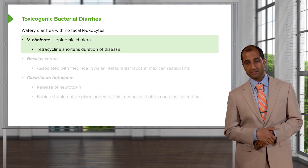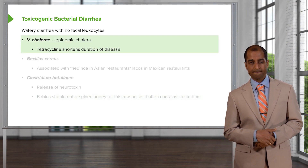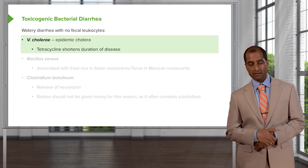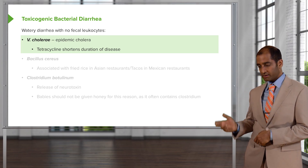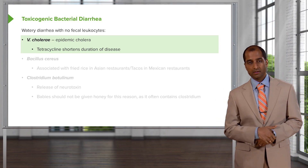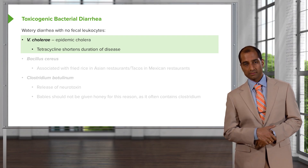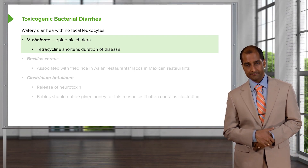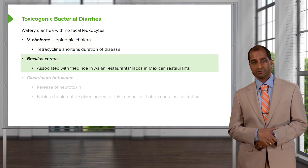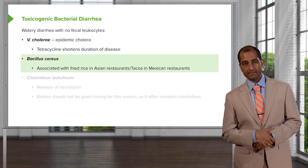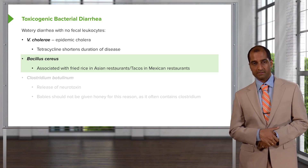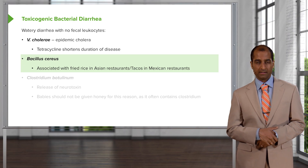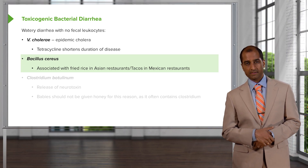Vibrio cholera — a good one to review — is a secretory type of diarrhea. The common denominator for all these organisms is no fecal leukocytes and watery diarrhea. Continuing with no fecal leukocytes: Bacillus cereus — the reheated rice, and also tacos. It doesn't always have to be Asian restaurants; it could be Mexican restaurants — Bacillus cereus.